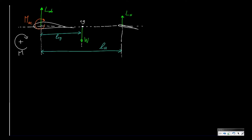Looking at equilibrium forces: downwards we have the weight, and upwards we have the lift of the wing-body plus the lift of the horizontal tail surface, which together form the total lift of the complete aircraft. When these conditions are met we have vertical force equilibrium. This is normally achieved by changing the angle of attack of the wing so that the total lift equals the weight and we maintain altitude.